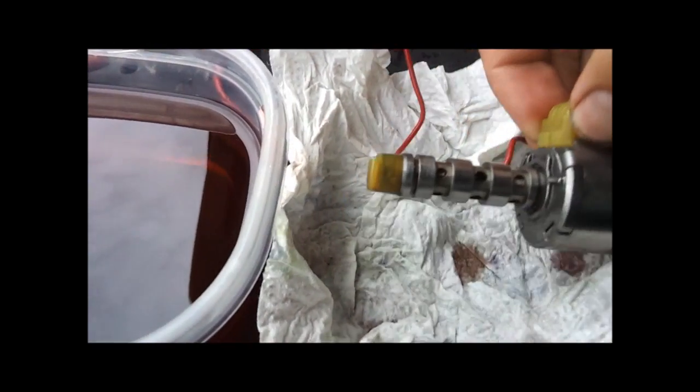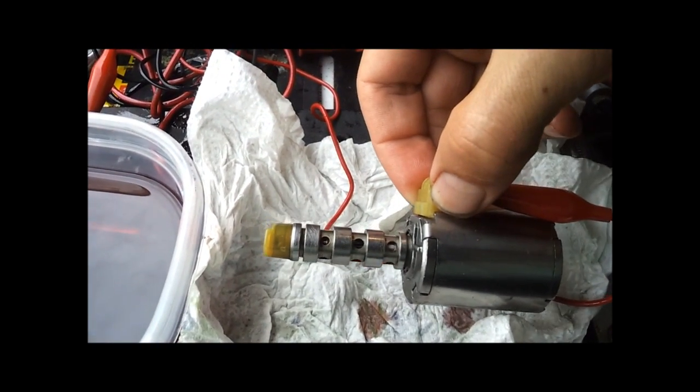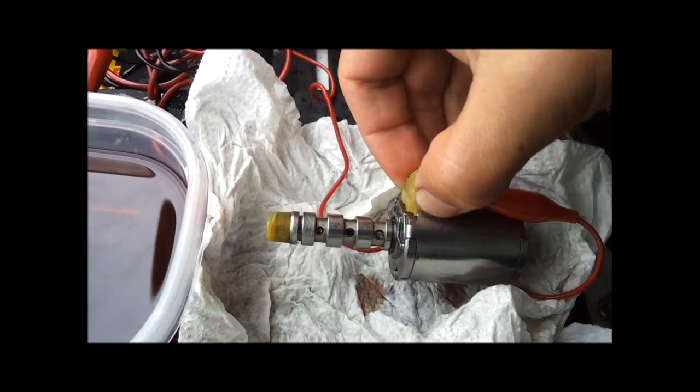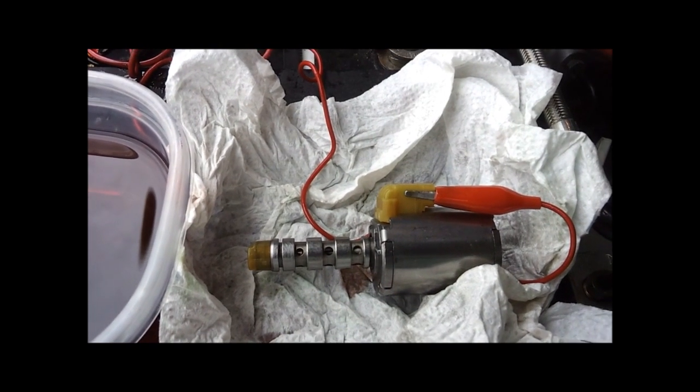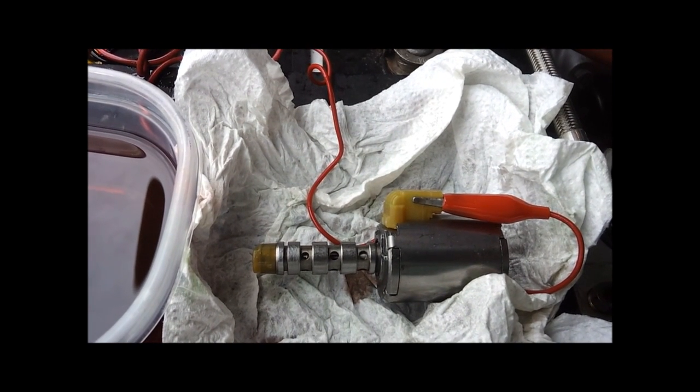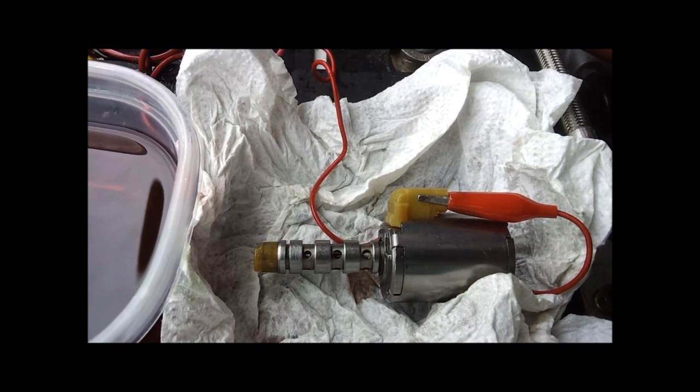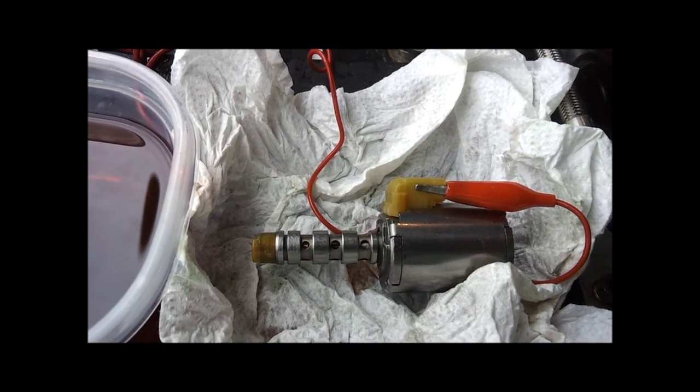This is the C solenoid, it's one of four standard shift solenoids. There's four in there that are the same. Then you have the coast clutch solenoid and the direct drive solenoid, those two are the same, and then there's a TCC solenoid.